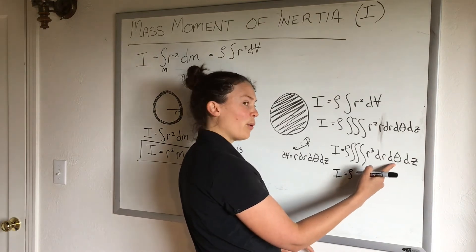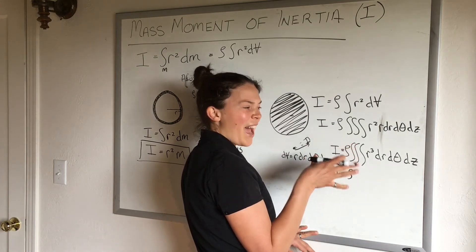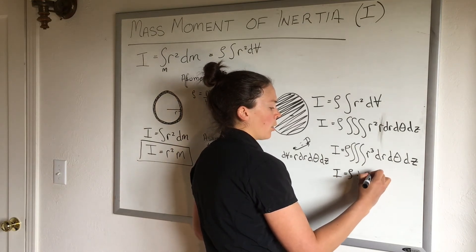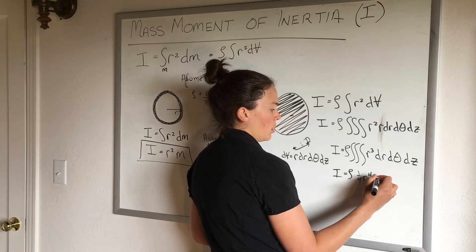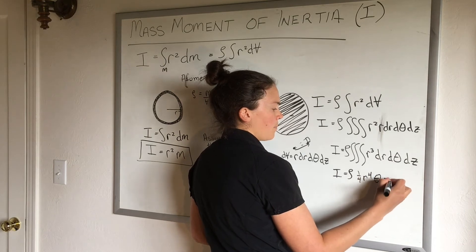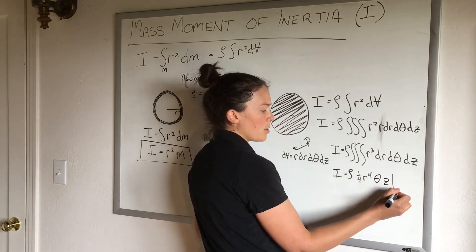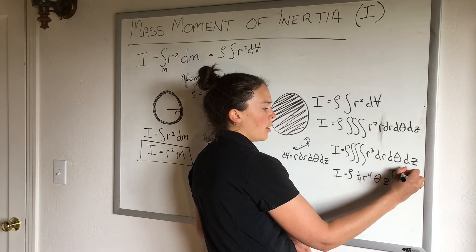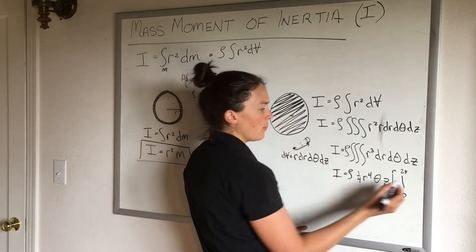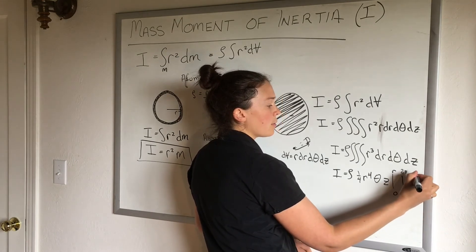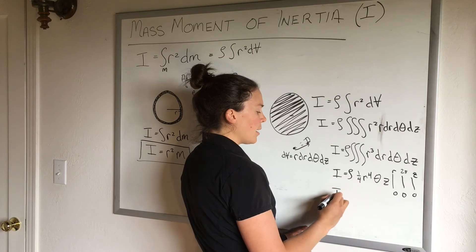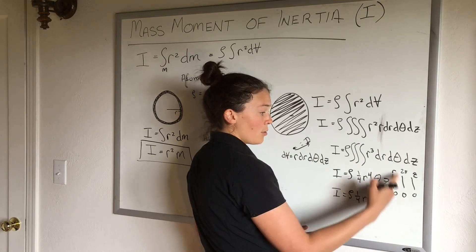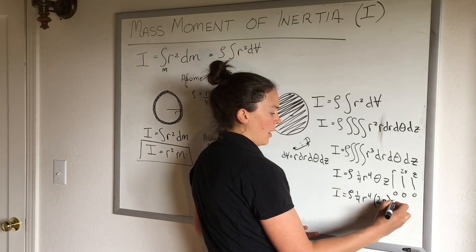r³ now becomes (1/4)r⁴, and then I need to do theta and z. In the r direction I'm going to go from zero to my actual r, in the theta direction I'm going to go from zero to 2π—I'm going to do the entire circle because we have a whole circle here—and in the z direction I'm going to go from zero to however thick that is. So if I do that, now I have ρ · (1/4)r⁴ · theta is now zero to 2π, so I actually have 2π minus zero here, and z.